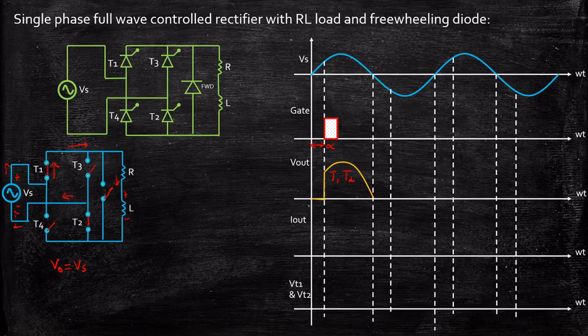Now what happens to the output current waveform? When the firing angle alpha is applied, the current starts increasing slowly as it flows through the load and the inductor starts charging. The current increases slowly because of the charging taking place in the inductor.